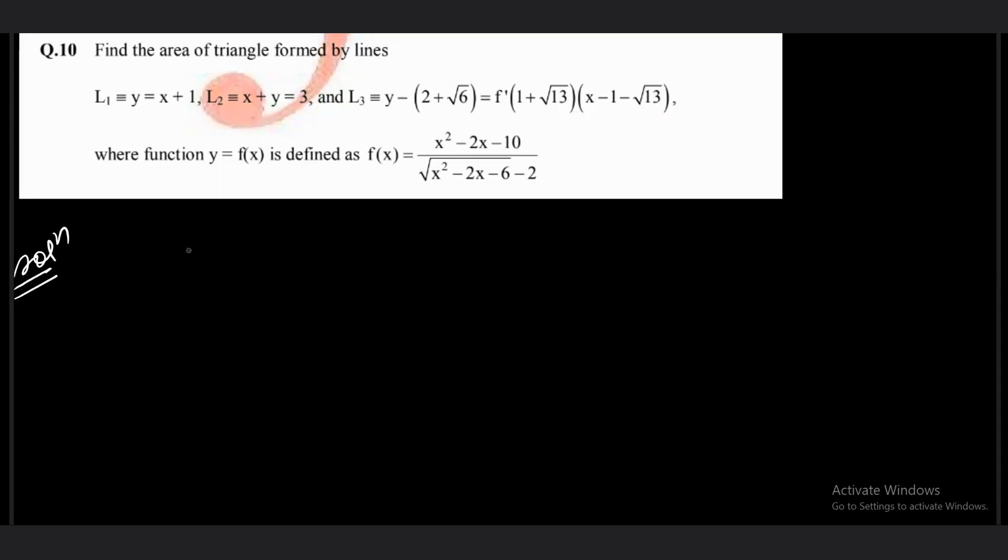So they are saying that L1 line is a very fixed line, y equals x plus 1. The second line that we have is y equals 3 minus x. So better write it as x plus y equals 3 only.